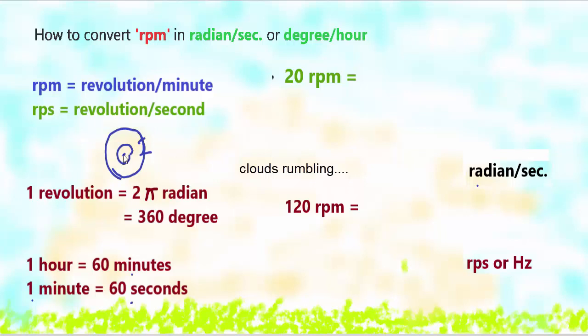One revolution equals traveling in a complete circle. One revolution travels 2π radian and also 360 degrees. So one revolution equals 2π radian and also equals 360 degrees. One hour equals 60 minutes. One minute equals 60 seconds. We should know these conversion formulas to convert RPM in other units. Let's take an example.